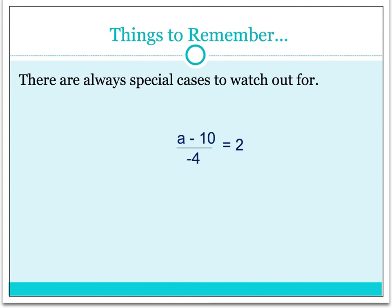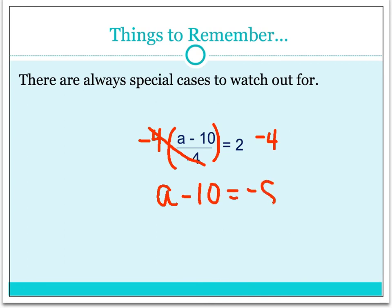The last thing to remember is that sometimes there are special cases to watch out for — exceptions to the rules. In this example, we have a on the left-hand side of the equal sign. We have a 10 being subtracted from it, and a negative 4 being divided. Normally we would get rid of addition and subtraction first, but in this case, because the entire numerator is being divided by the negative 4, we have to get rid of this negative 4 first. So we undo division by multiplying by negative 4 on both sides. We then have a minus 10 is equal to negative 8.